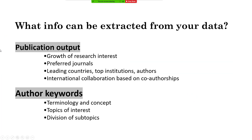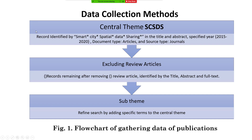What information can be extracted from your data? Publication output and growth — the growth of research interest — preferred journals, leading countries, top institutions, authors, international collaboration based on co-authorship, author keyword terminology and concepts, topic of interest, and division of subtopics.